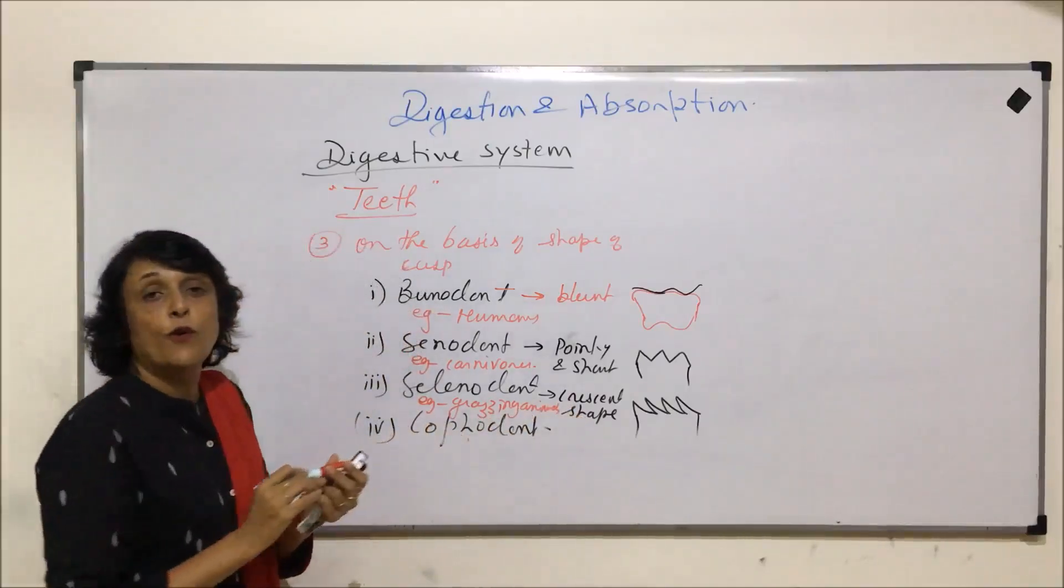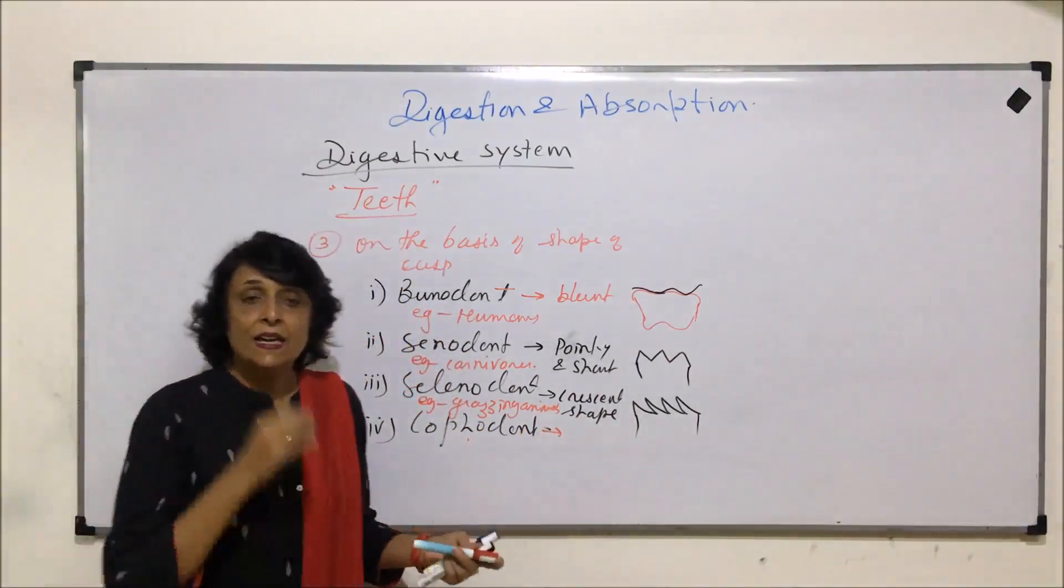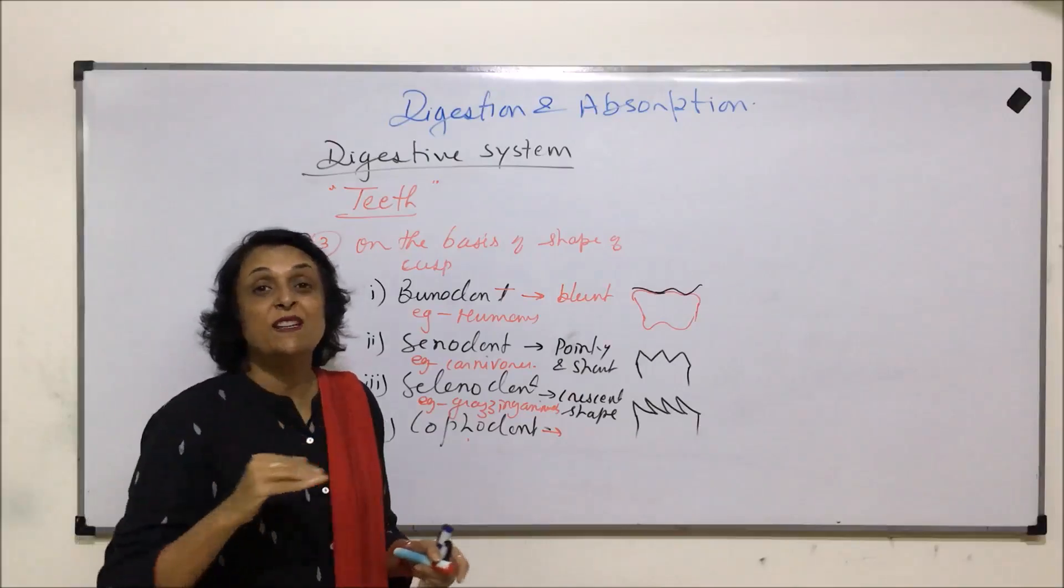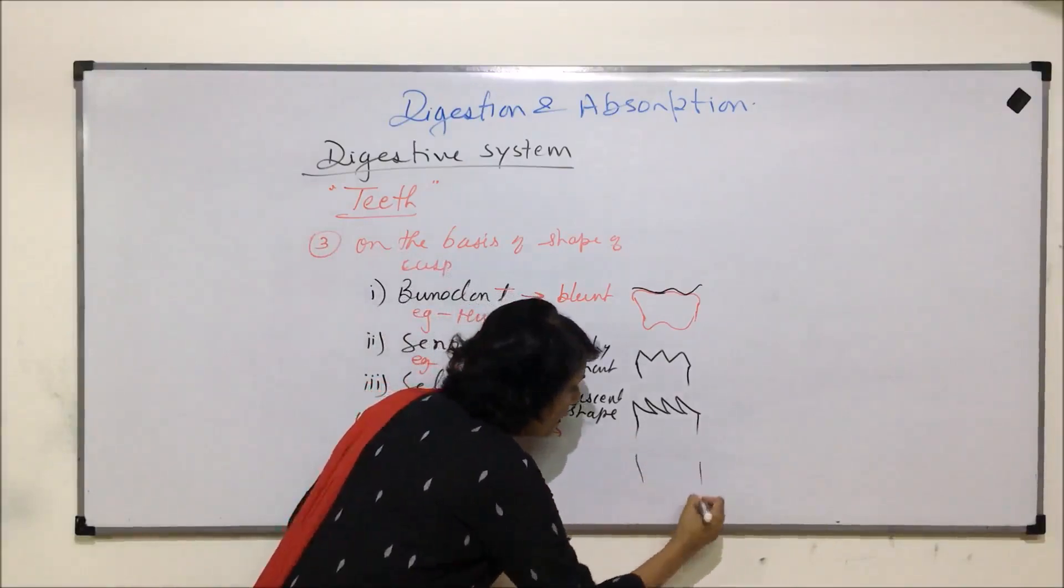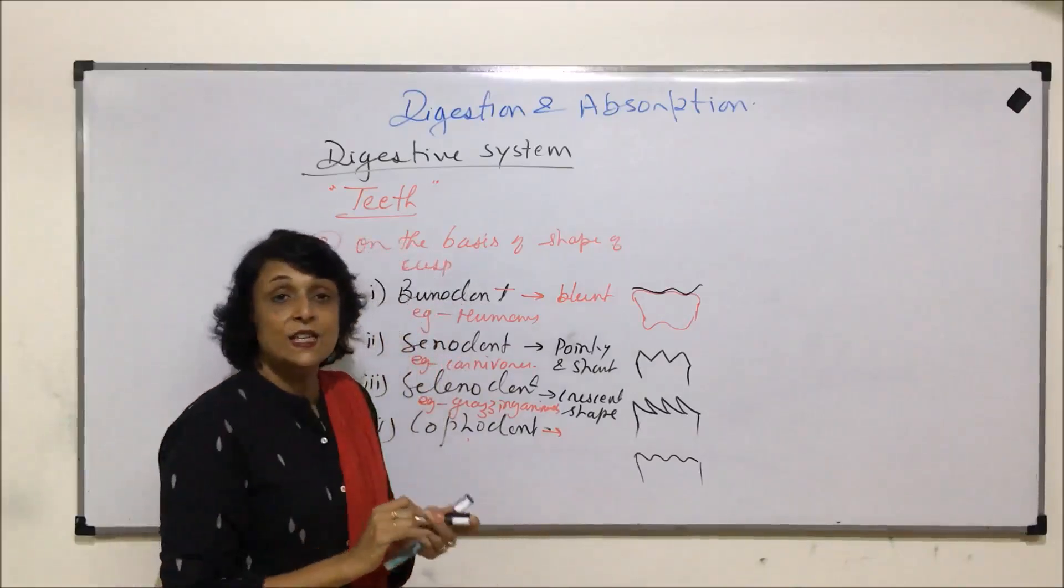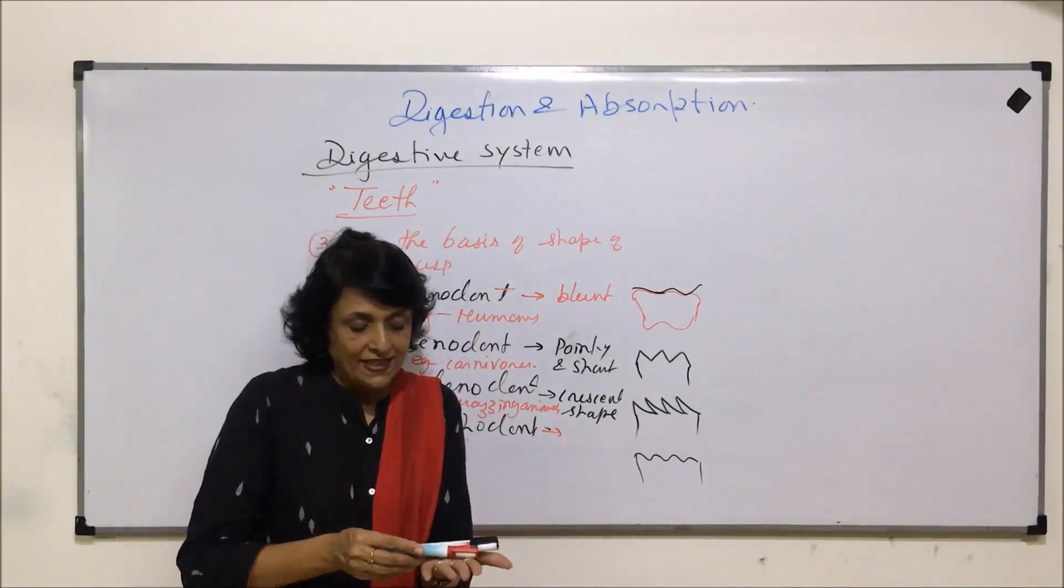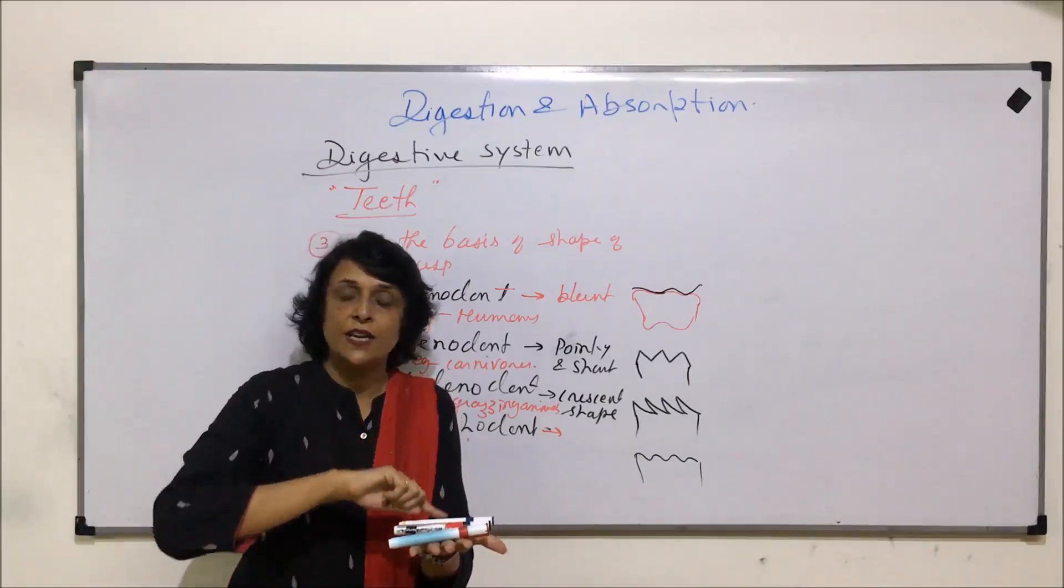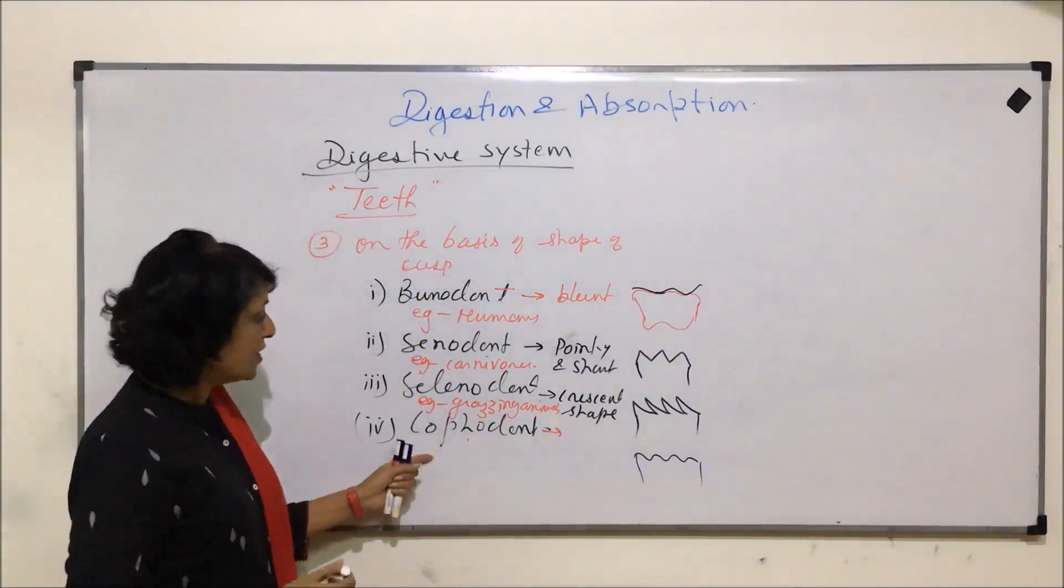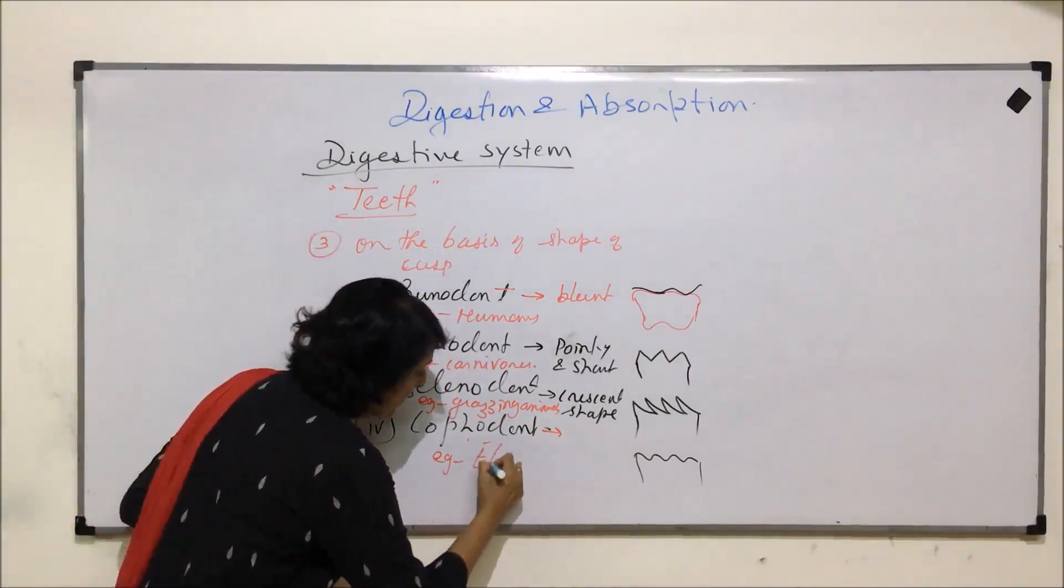And lofodont, they have long ridges. Like we see on the roads, there are speed breakers. So if this is the tooth, then on the tooth, there would be these kind of structures. This is visible from the side. But if we see the entire surface, then there would be these kind of depressions. So there is one bulge, then again a depression, again a bulge, again a depression. So they have ridges. Such teeth are called lofodont and they are found in elephants.